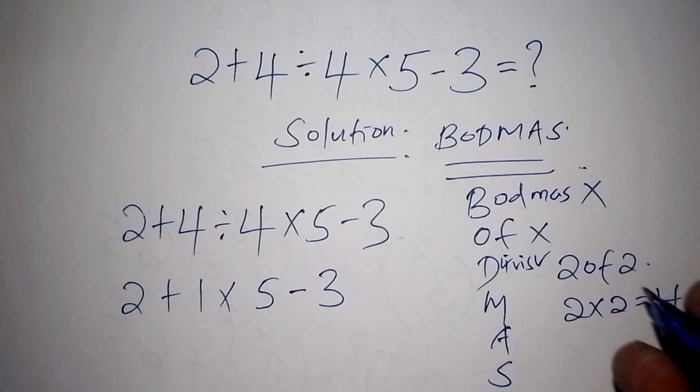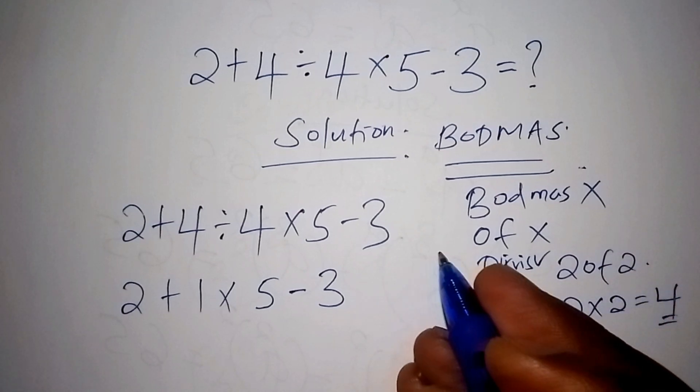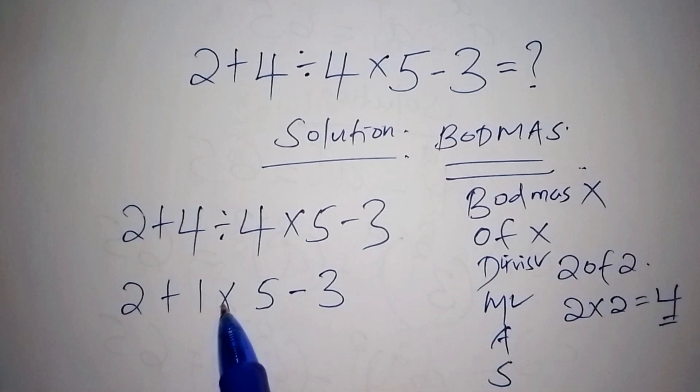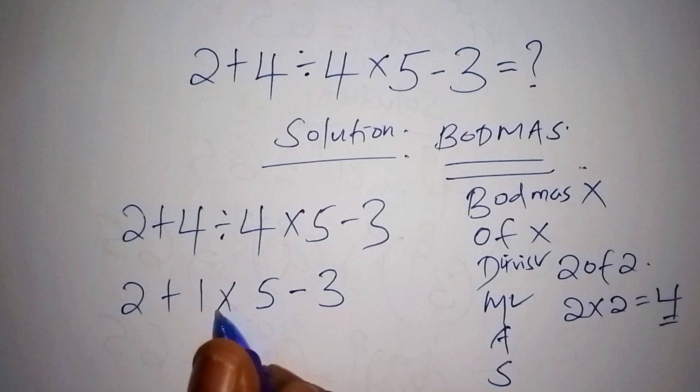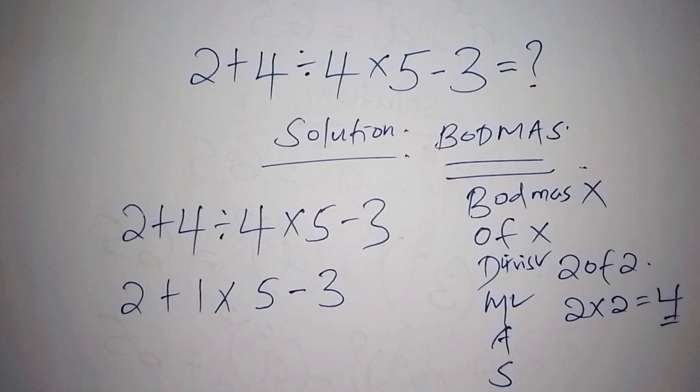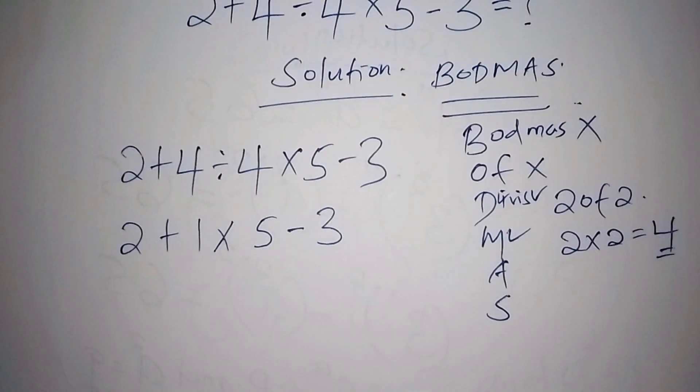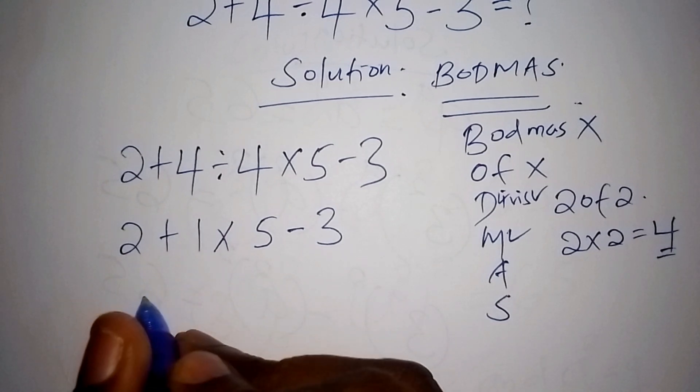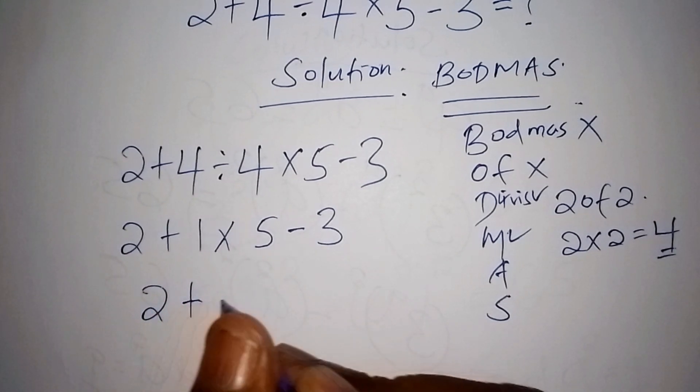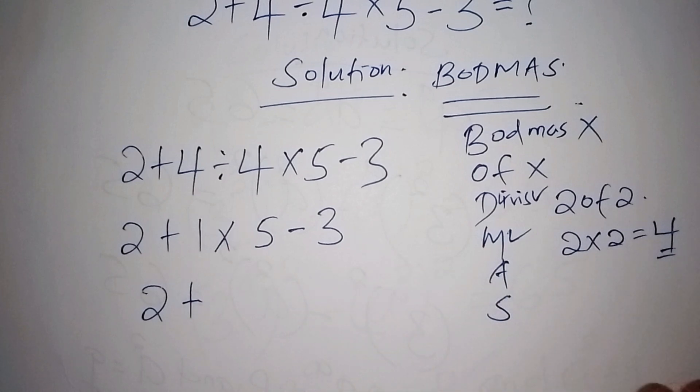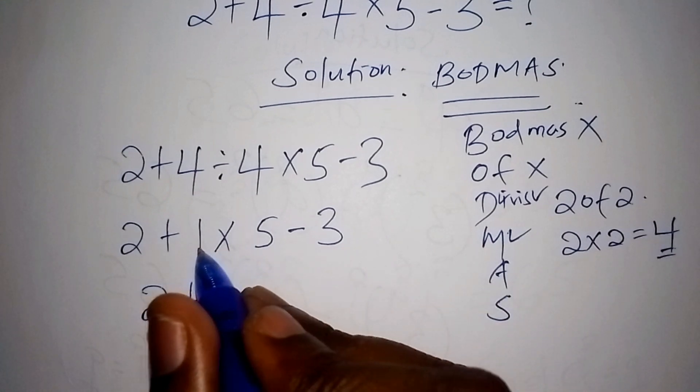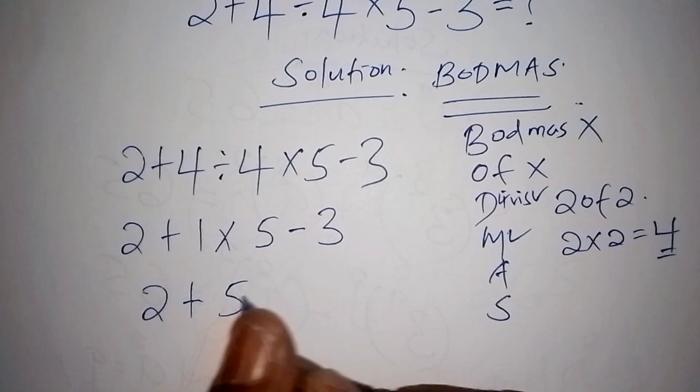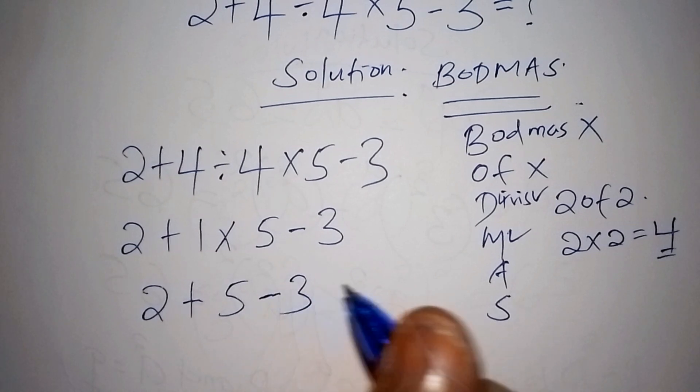So from there now we move to M. M stands for multiplication. So we shall have to work out this multiplication first. So here 2 plus 1, we don't work out. So we shall have just our 2 here, then plus, because we are not working the addition, then 1 times 5 is 5, then minus 3.